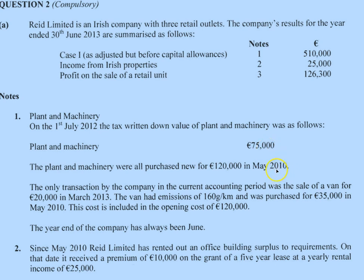The assets were purchased in 2010 and we're doing the year-end June 2013, so they're only there for three to four years — no issue with them being written off. Then there's the disposal of a van. It was sold for $20,000, and it has emissions listed, but we don't care about the emissions because it's not a passenger motor vehicle. It's only passenger motor vehicles where cost is restricted based on emissions.